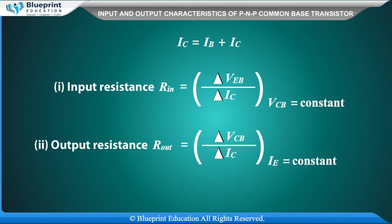Input resistance RN is equal to delta VEB divided by delta IE, with VCB constant. Output resistance RN is equal to delta VCB divided by delta IC, with IE constant.